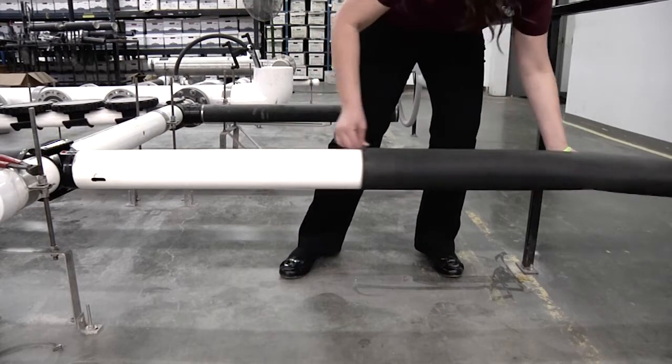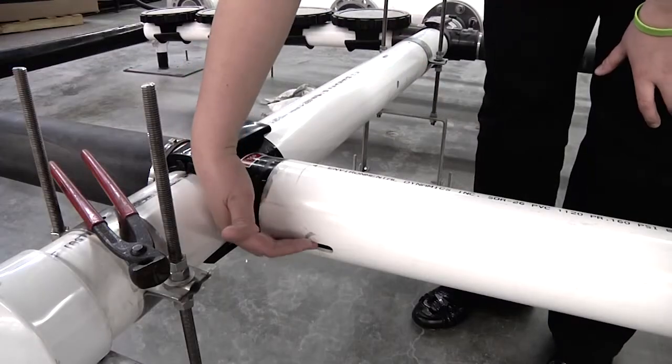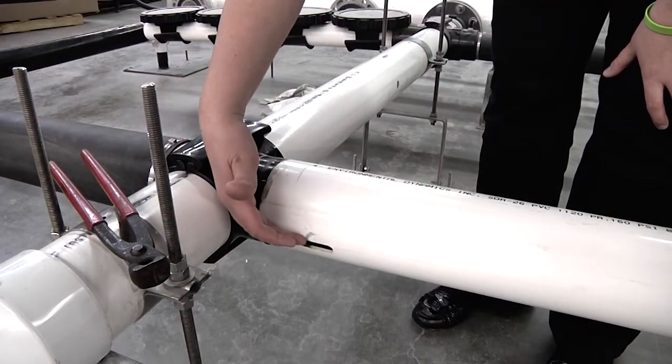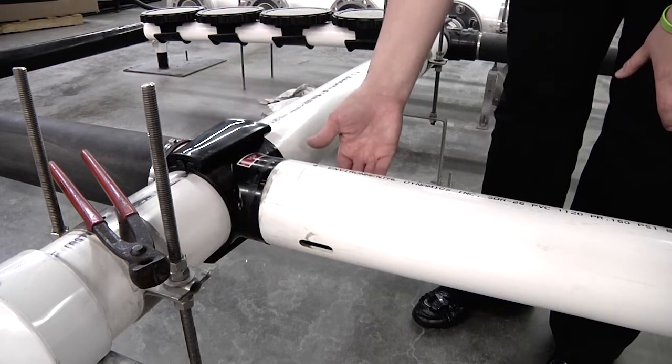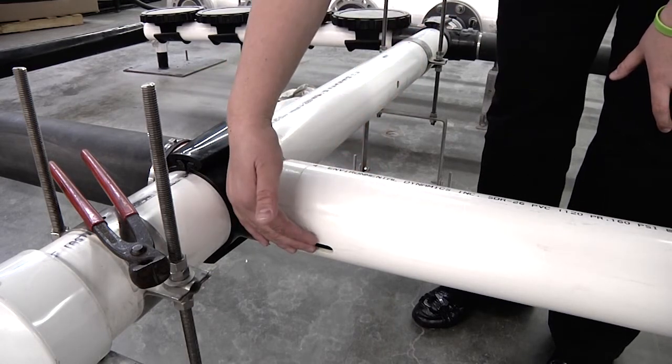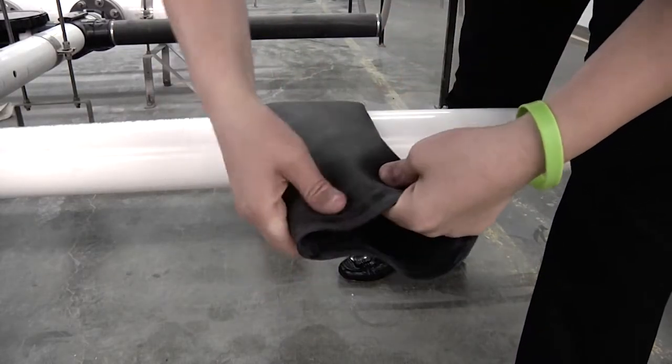Slide the membrane off the diffuser tube. Locate the holes on the diffuser tube. This is where the air comes out of the tube and are important for proper alignment of the new diffuser membrane.